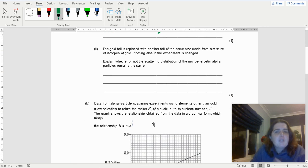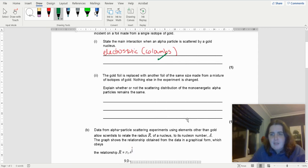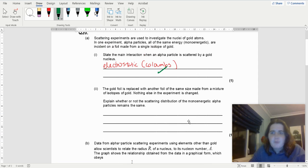The gold foil is then replaced with another foil of the same size made from isotopes of gold. Nothing else in the experiment has changed. Explain whether or not the scattering distribution of the monoenergetic alpha particles remains the same. So you're not changing the actual charge, you're still at gold. So you still have the same amount of protons.